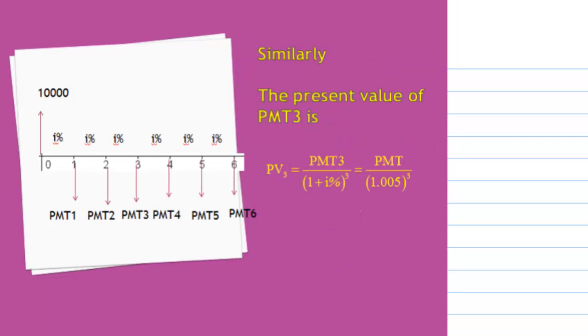Using the similar argument, we can know that the present value of PMT3 is PV₃ equals PMT over 1.005³.